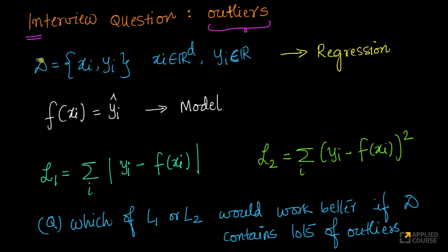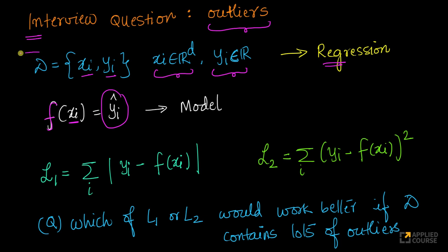Imagine you have a dataset which you are going to use to train your model. Let us assume the dataset contains pairs of xi and yi. Xi are your data points — xi is d-dimensional and real valued. Yi is also real valued, which means what you are going to train is a regression model. Imagine you have a model called f — think of it as a linear regression or a neural network model with some weights. Your model takes each xi as input and predicts yi, called yi hat. This is the standard problem setup of any regression problem.